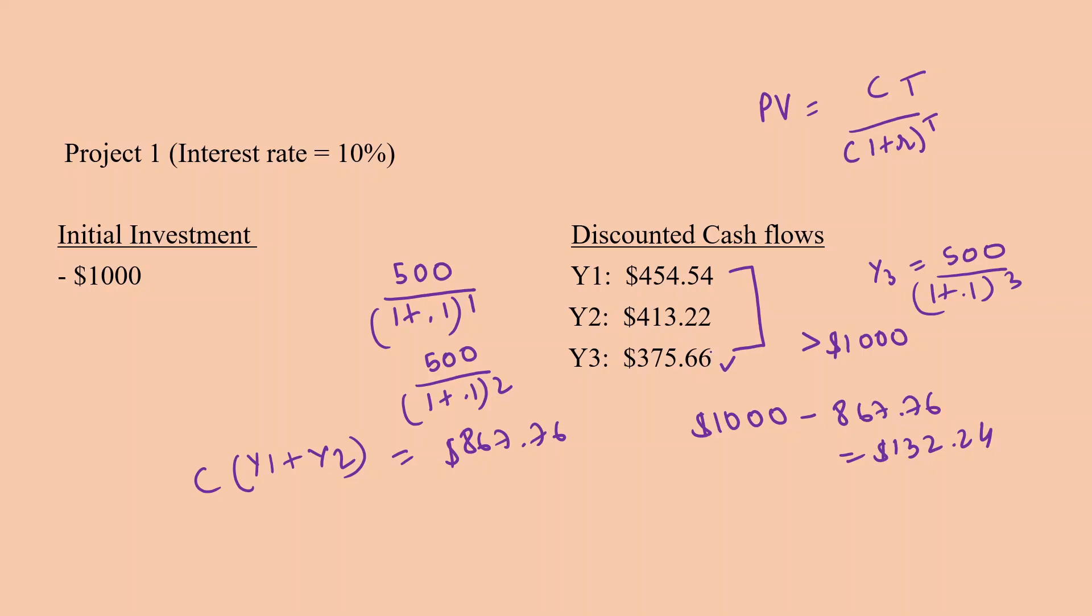So we need to figure out the fraction of time we need from the third year to complete the payment. For that we'll just divide $132.24 by $375.66, and that fraction comes out to be 0.35.